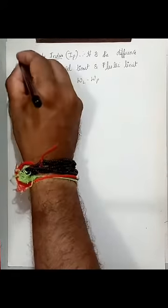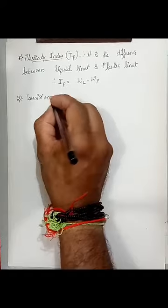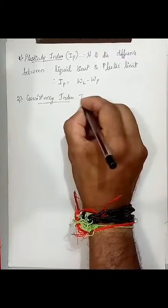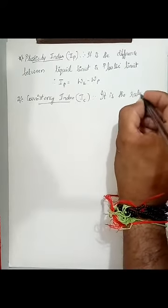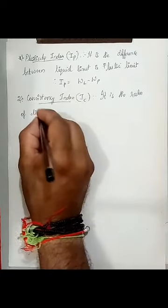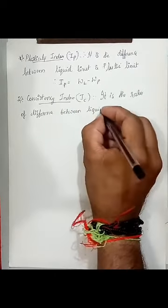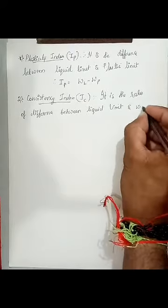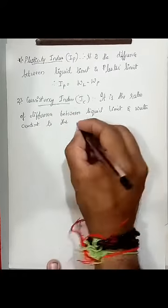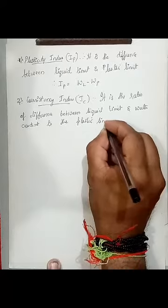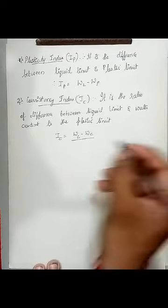Then second term, consistency index, denoted by IC. You can write down: it is the ratio of difference between liquid limit and water content to the plastic limit. That is IC equals WL minus W (water content) divided by plastic limit.